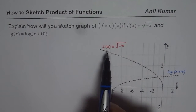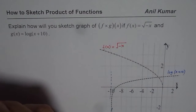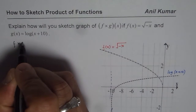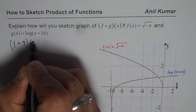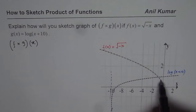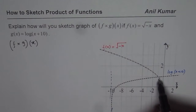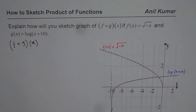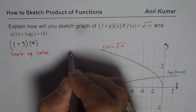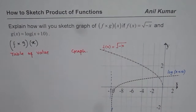Now the question is how can we sketch the graph of the product of these functions. We need to sketch the graph of f times g of x. We will adopt two different approaches: one is a table of values, and the other approach will be from the graph itself. These are common approaches you can always adopt while sketching the graph of a combination of functions.